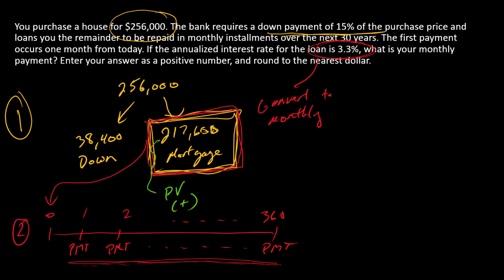I'm going to start with $217,600, that's going to be my PV, and I'm going to make that a positive number because it's money that I get to use to pay for the house. And then the payment that I'm solving for, that's going to be a negative number because it's money that I have to send away from me to the bank.